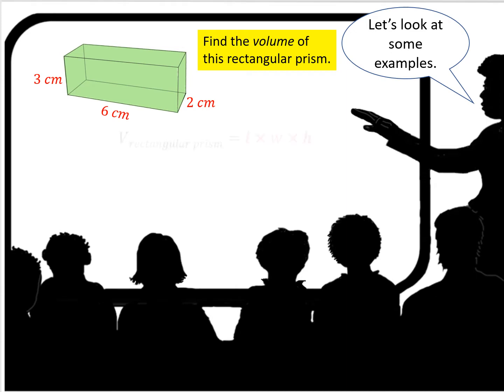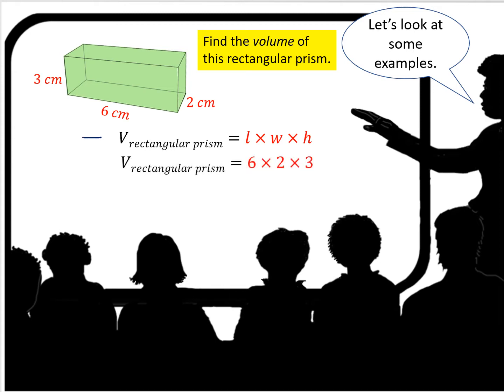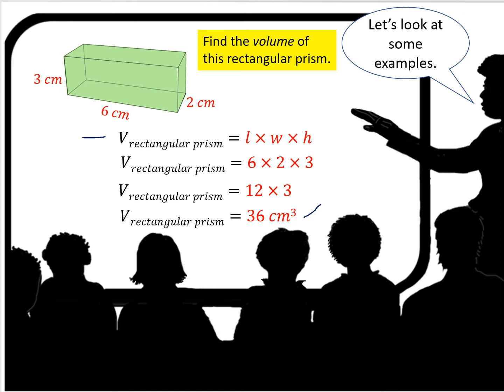Let's look at some examples. Find the volume of this rectangular prism. Knowing that the formula for volume of a rectangular prism is length times width times height, we're going to multiply 6 times 2 times 3. We get 12 times 3, which is 36 centimeters cubed. That would be the volume of this particular rectangular prism.